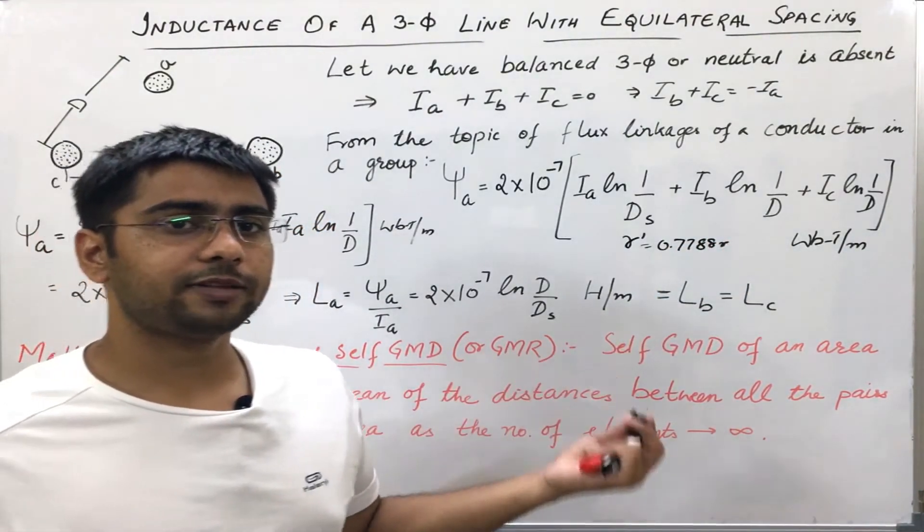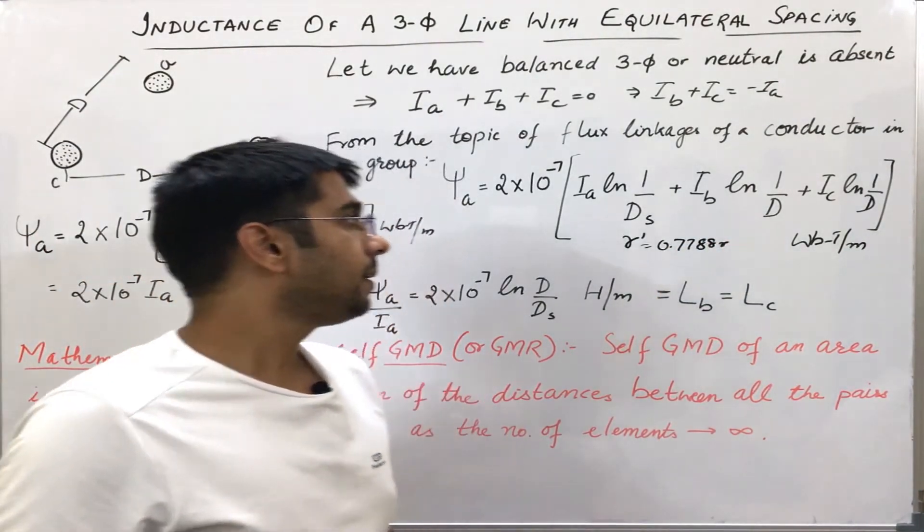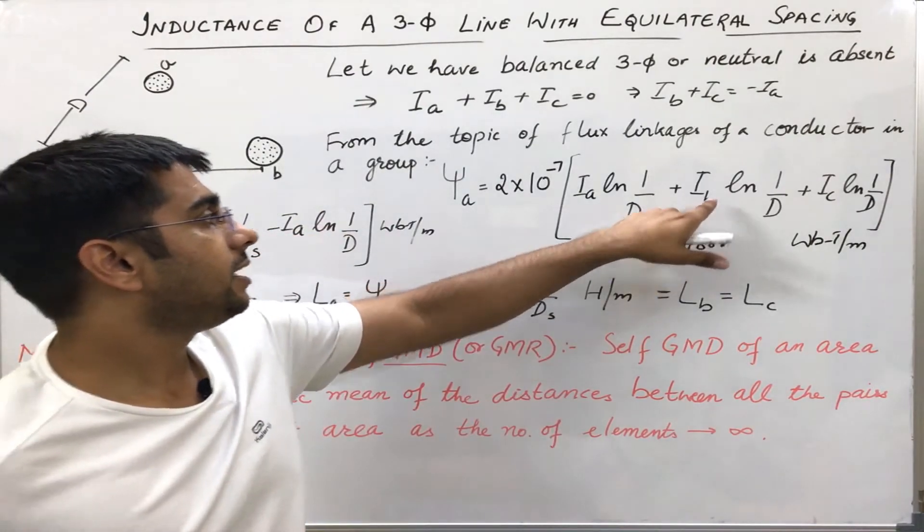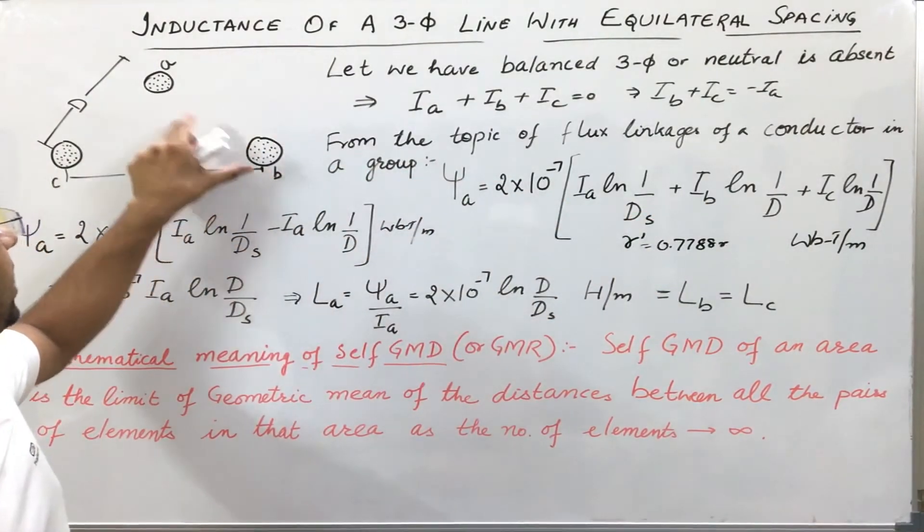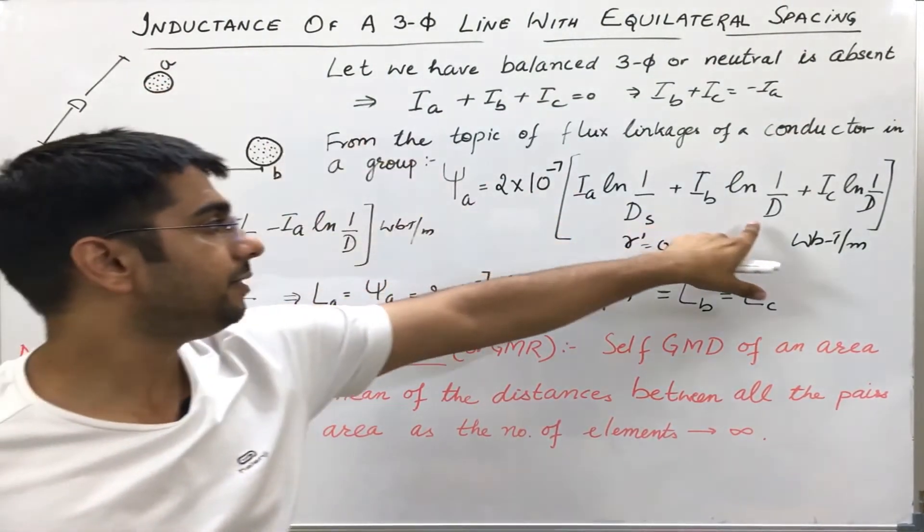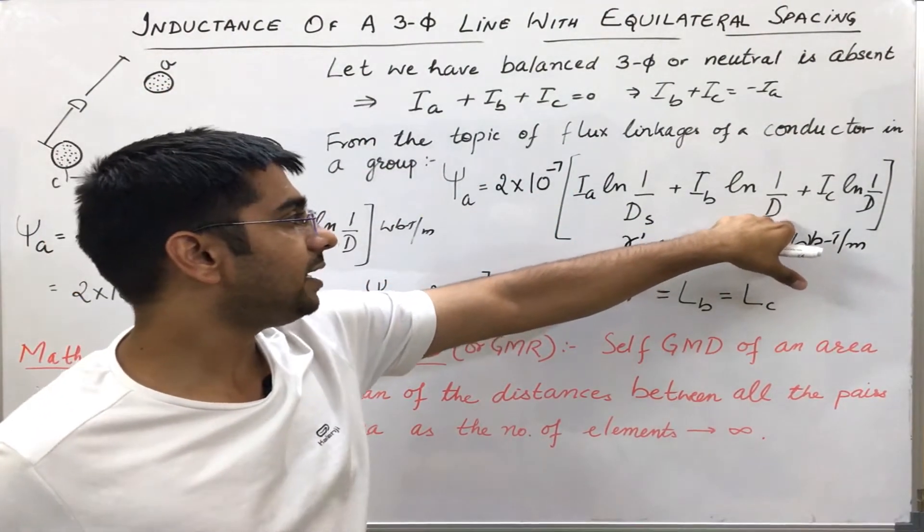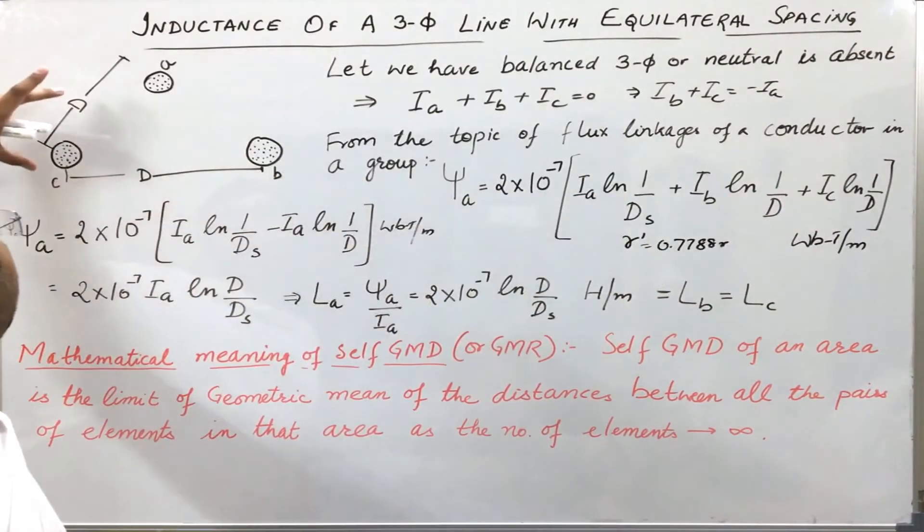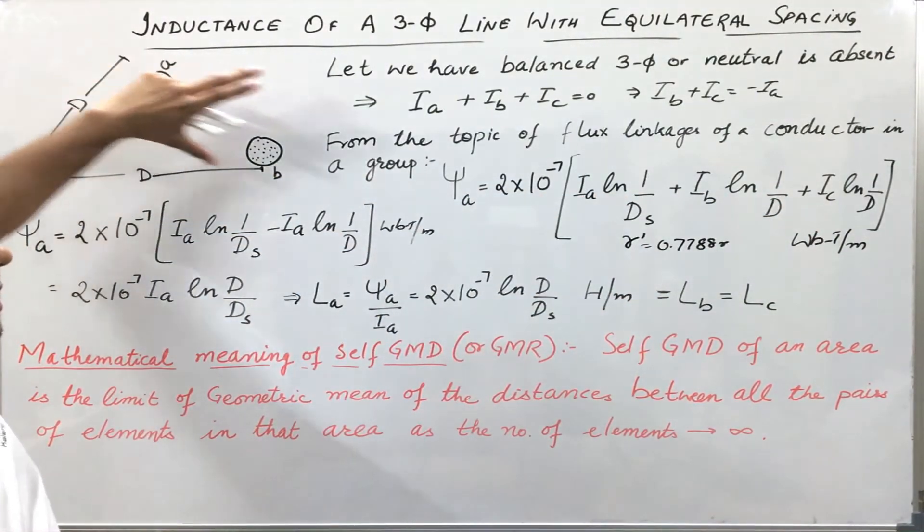Plus IB, the current in other conductor, and the distance between those two conductors which is D here. Similarly, the third conductor current and distance between those two conductors.